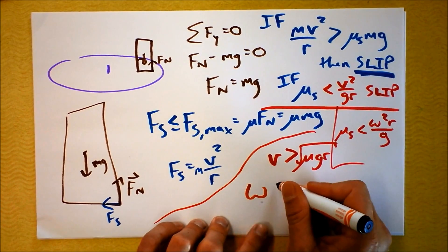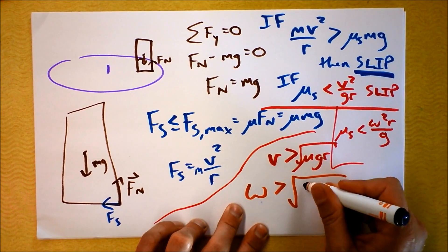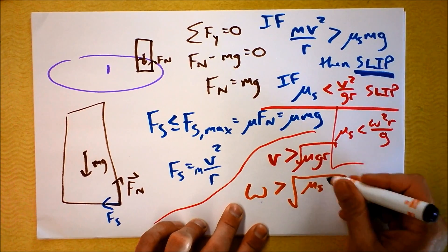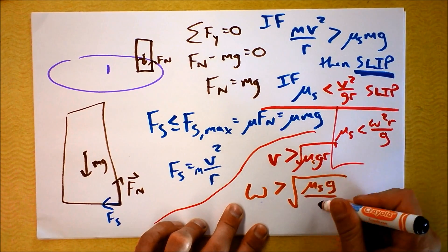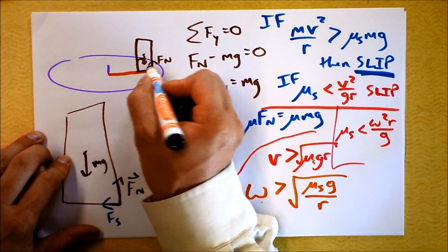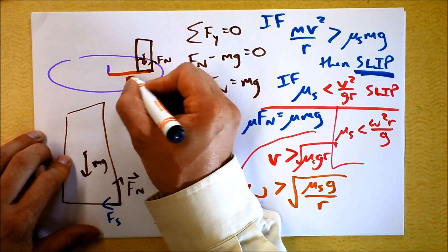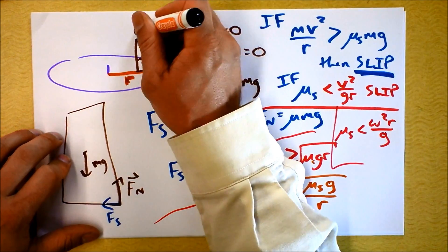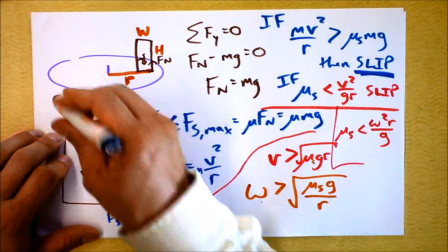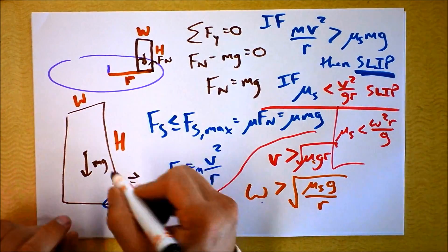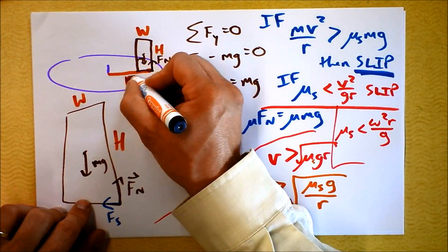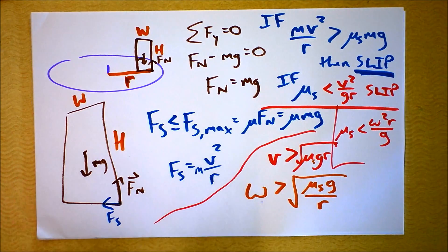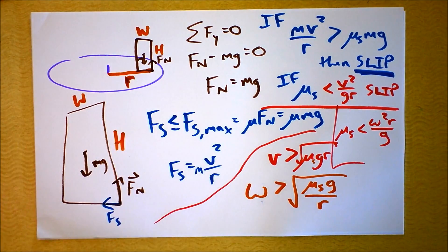Then omega would have to be greater than the square root of μ_s times g divided by the radius. That's the radius of the circle that the thing is experiencing. I'm going to have to define things like W and capital H — the width and height of the box — and not use r for those, leaving r as the distance between the center of the axis of rotation for the whole turntable.